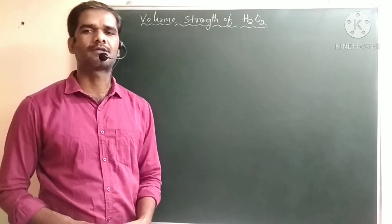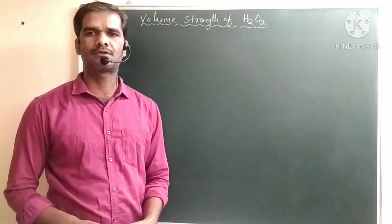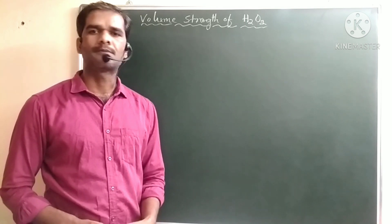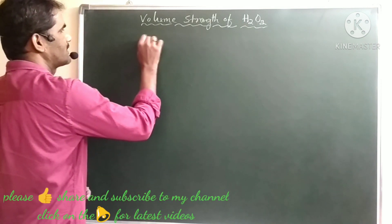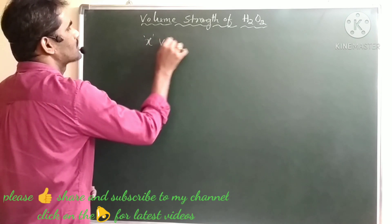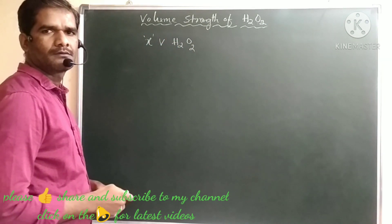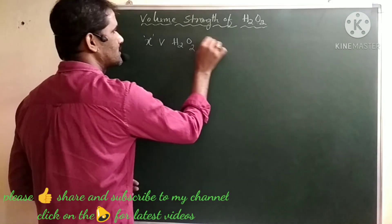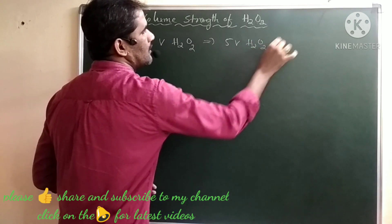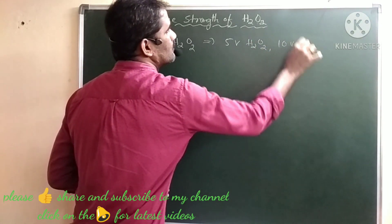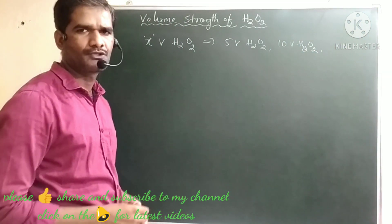What is the volume strength of H2O2? Generally, the concentration of H2O2 is expressed in terms of volume strength. So H2O2 is labeled like 'X volumes of H2O2'. Commercially available H2O2 is written as 5V H2O2, 10V H2O2, 20V, 50V, 100V, and so on.